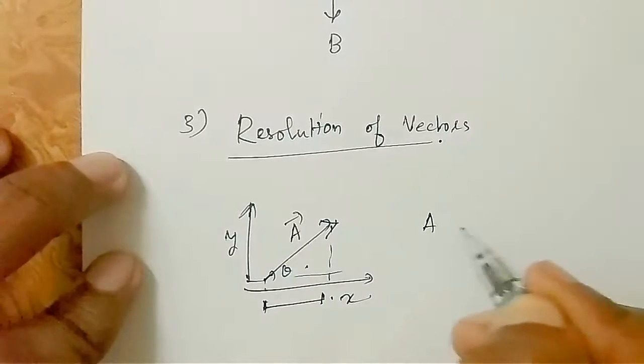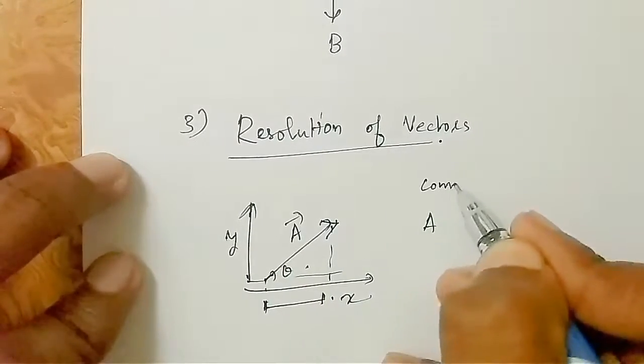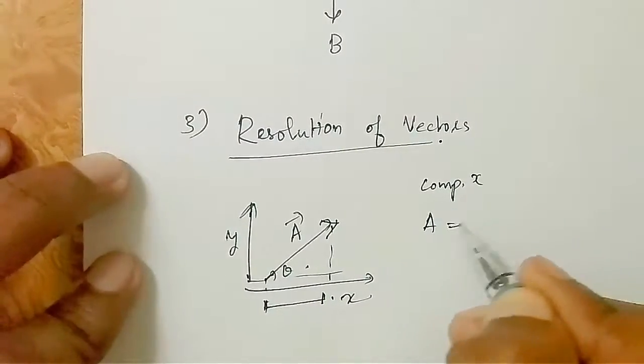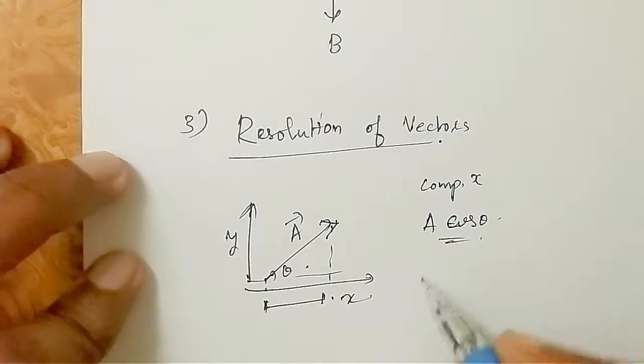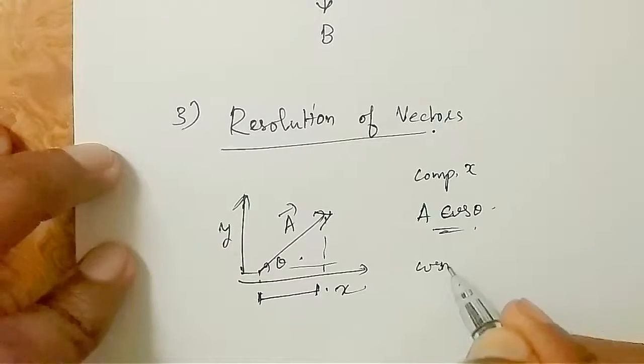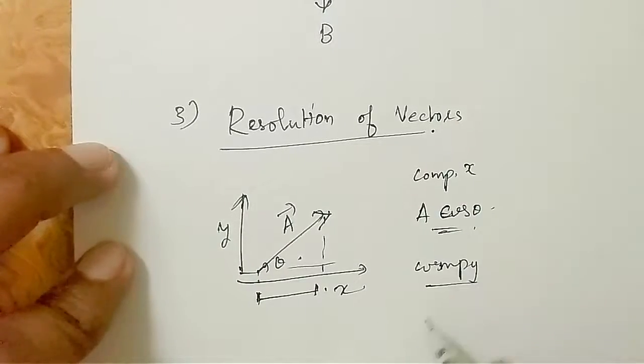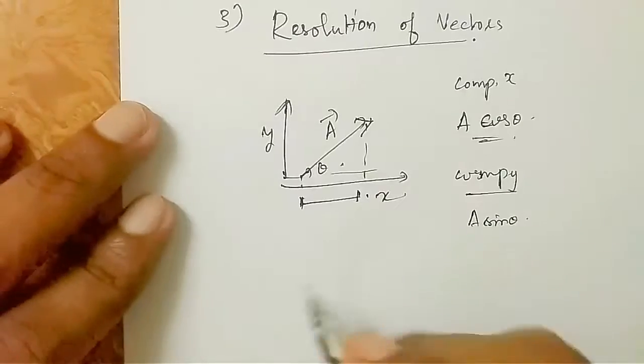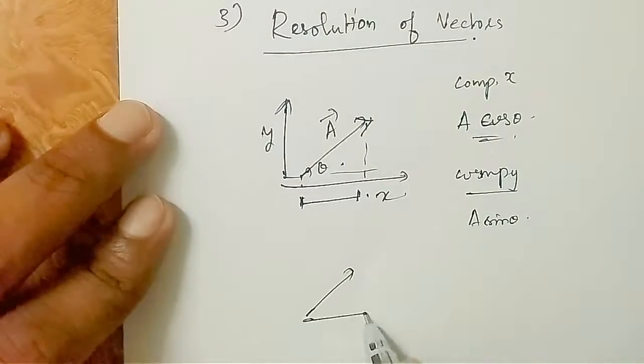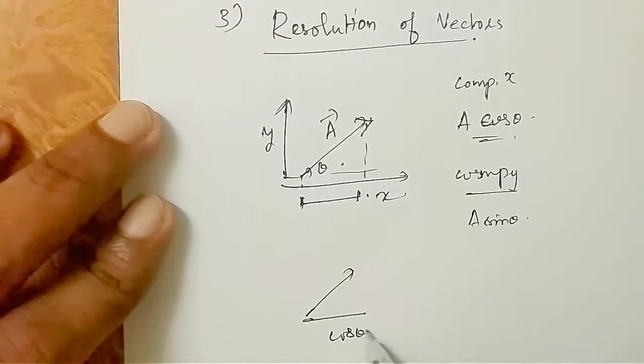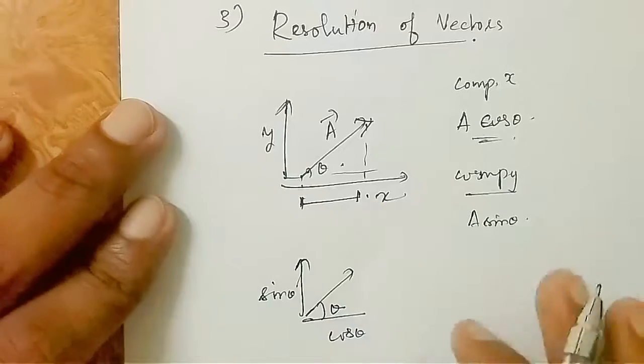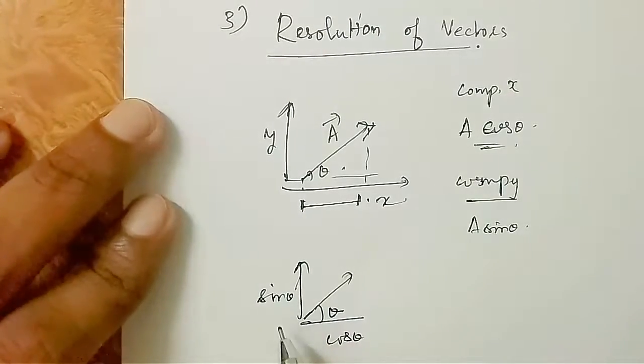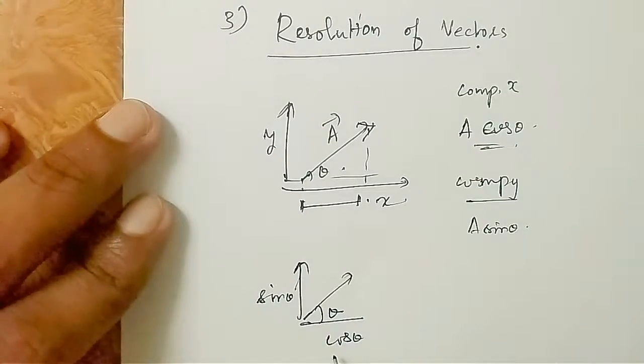For vector A at angle theta, the x-axis component is A cos theta, and the y-axis component is A sin theta. The adjacent side uses cos theta, and the opposite side uses sin theta.